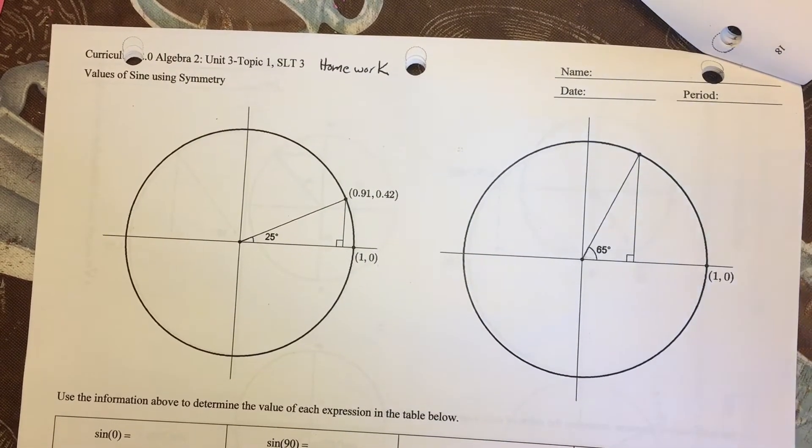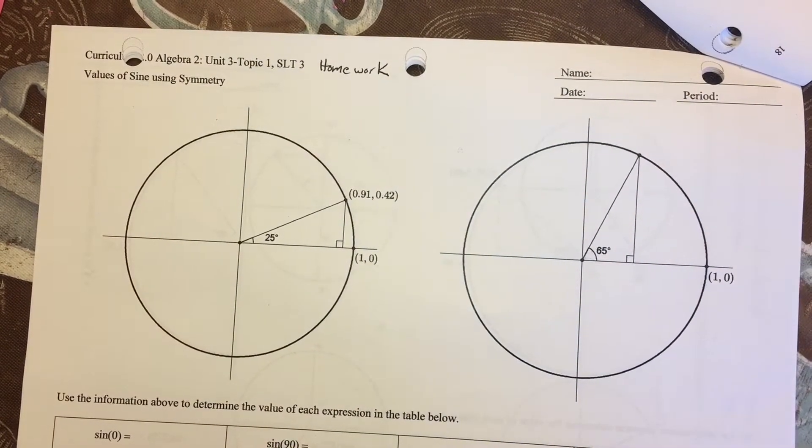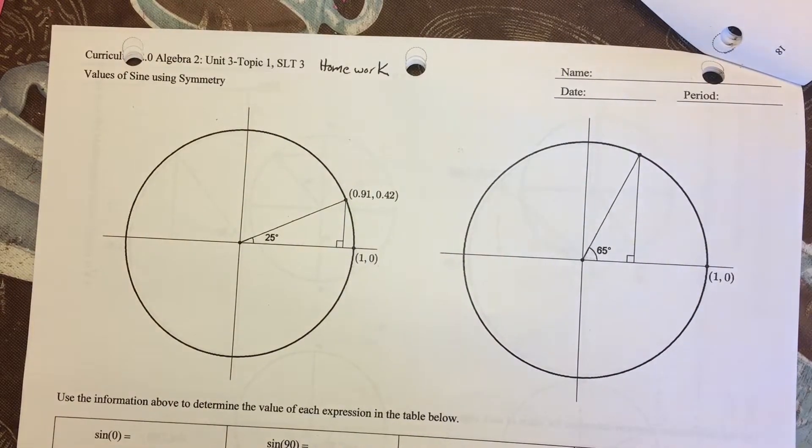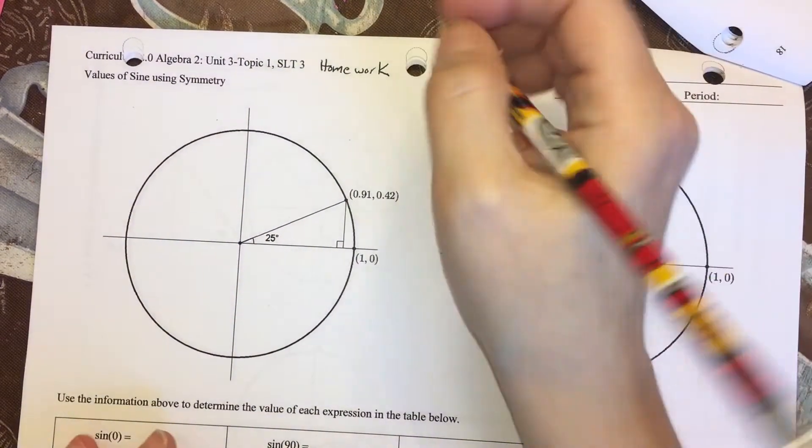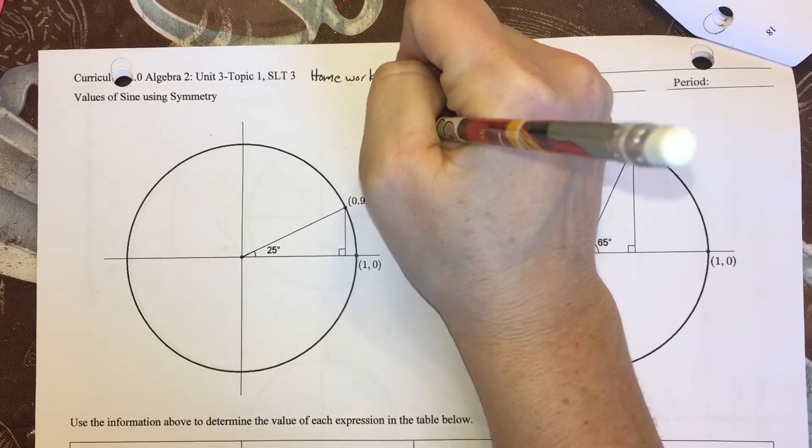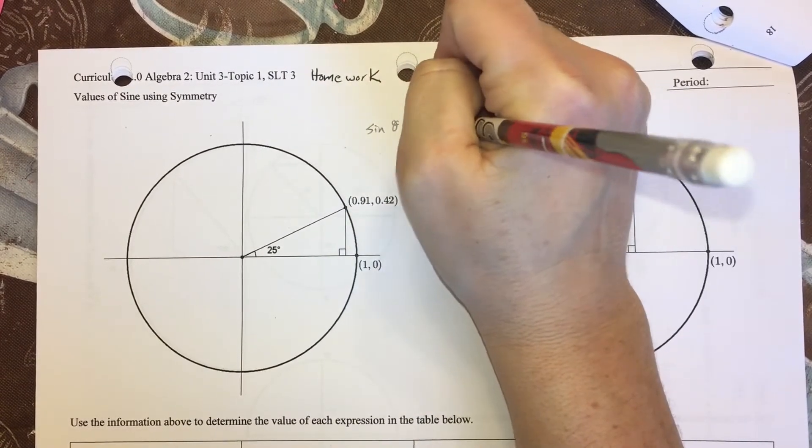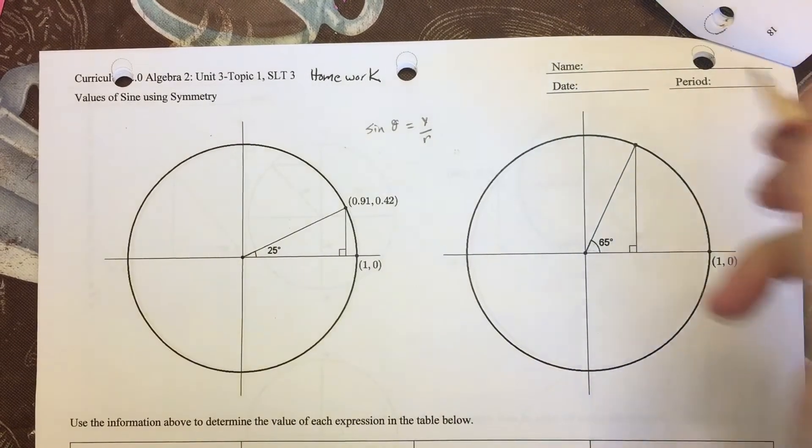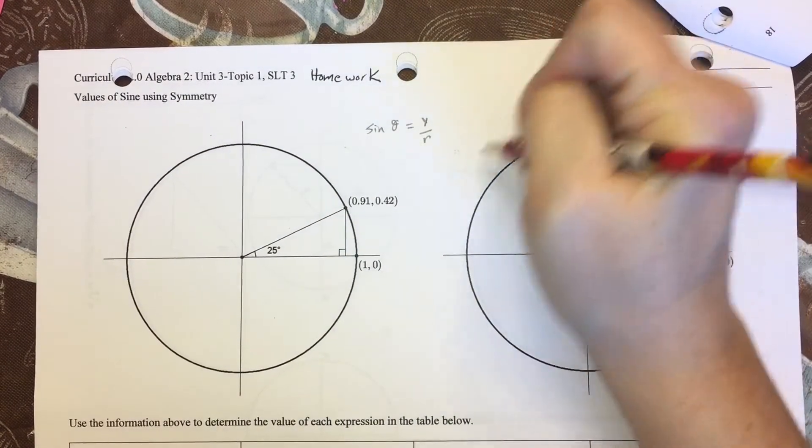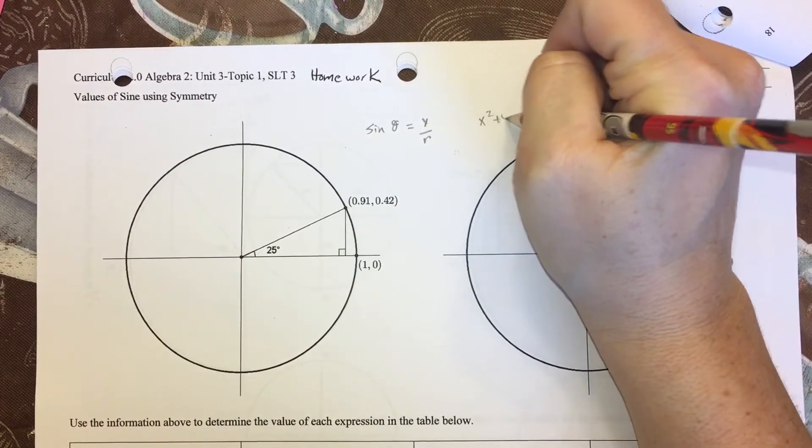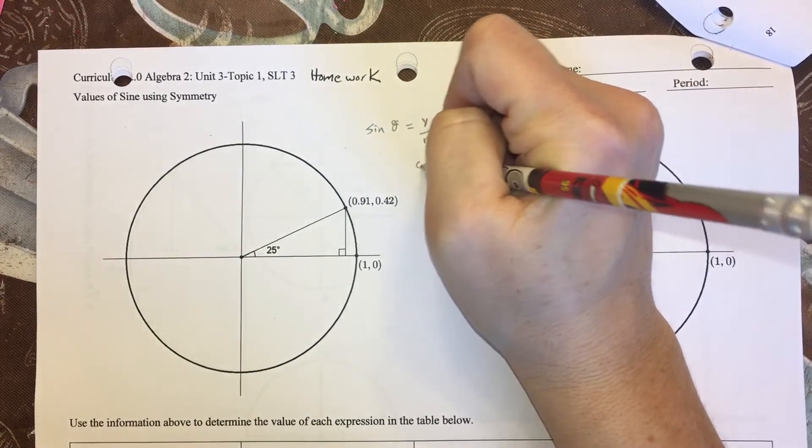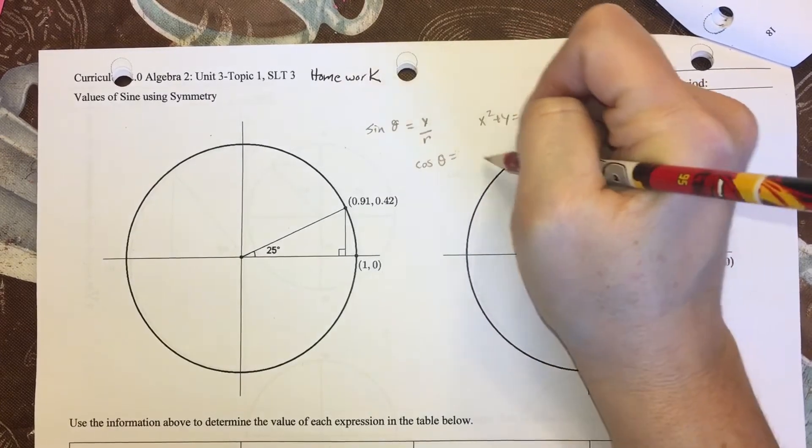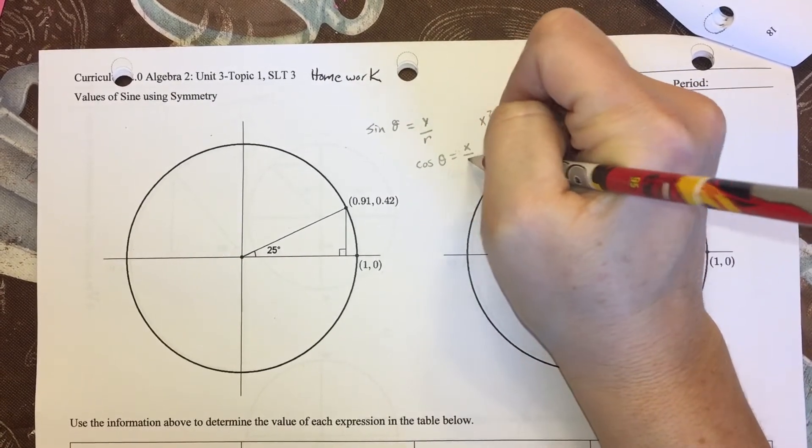Okay, this is going to be a video to help you out with Student Learning Task 3: Finding Values of Sine Using the Symmetry of a Unit Circle. There are a couple things I want to remember from our lesson today. The first is that sine of theta is equal to y over r. I also want to remember that x squared plus y squared equals r squared, which is like the Pythagorean theorem, and not really needed for this homework but just goes with the set of facts. Cosine of theta is equal to x over r.